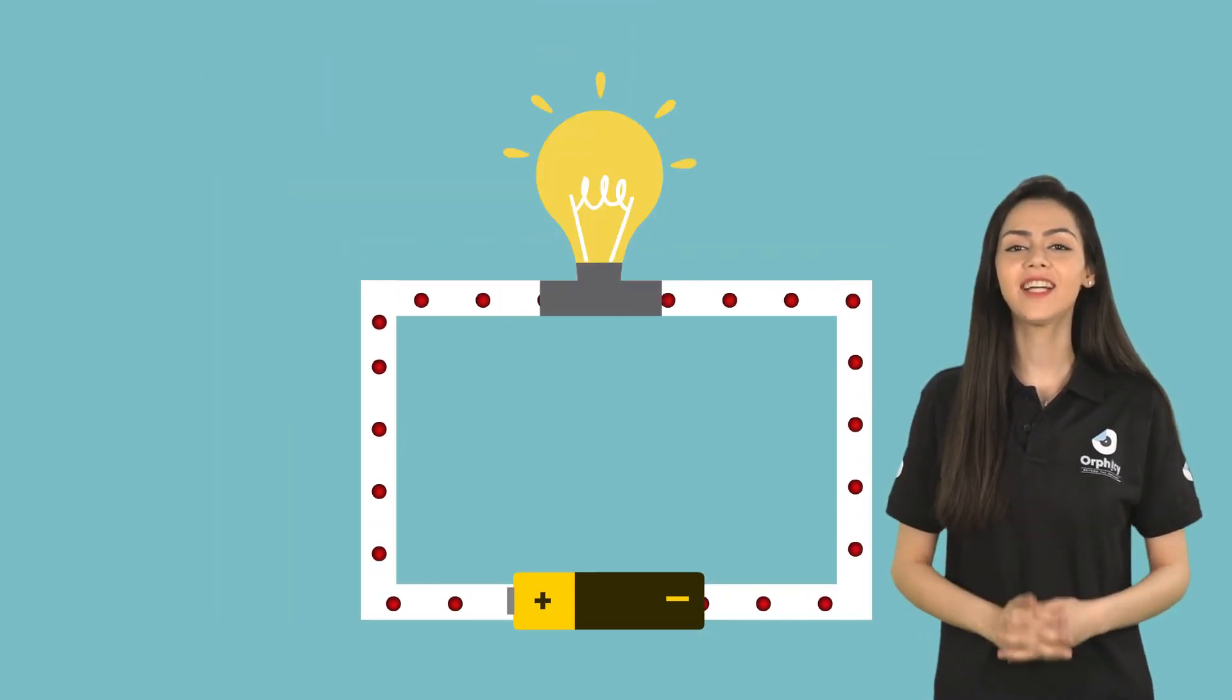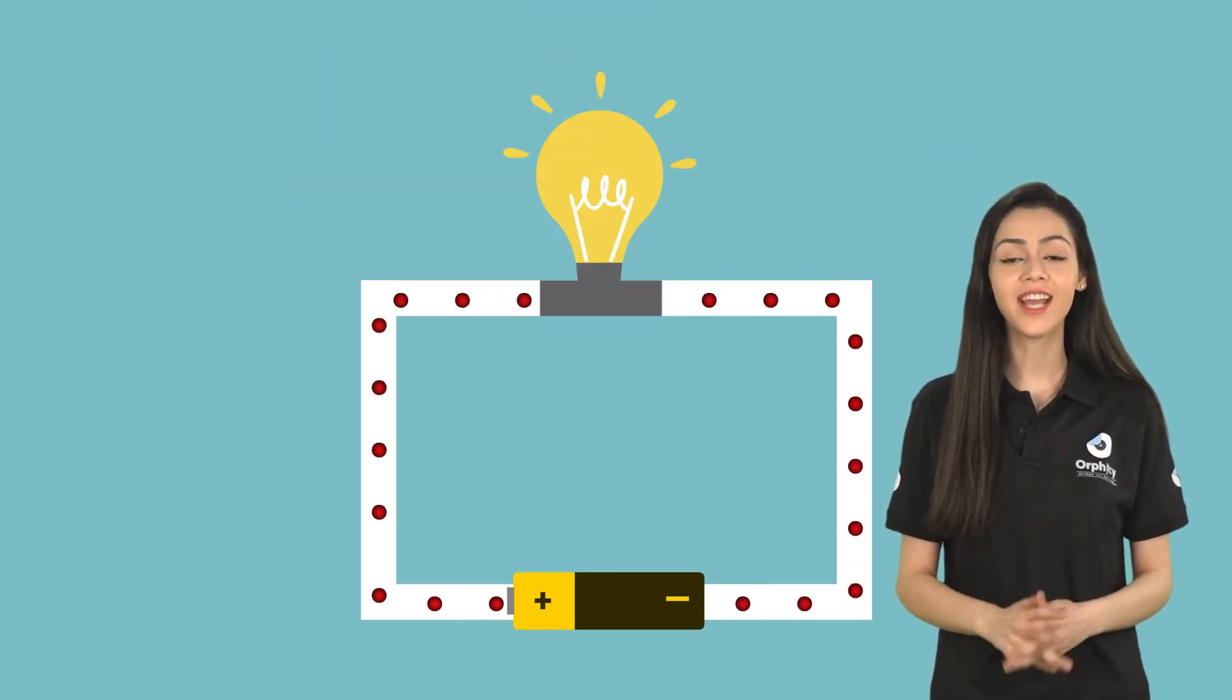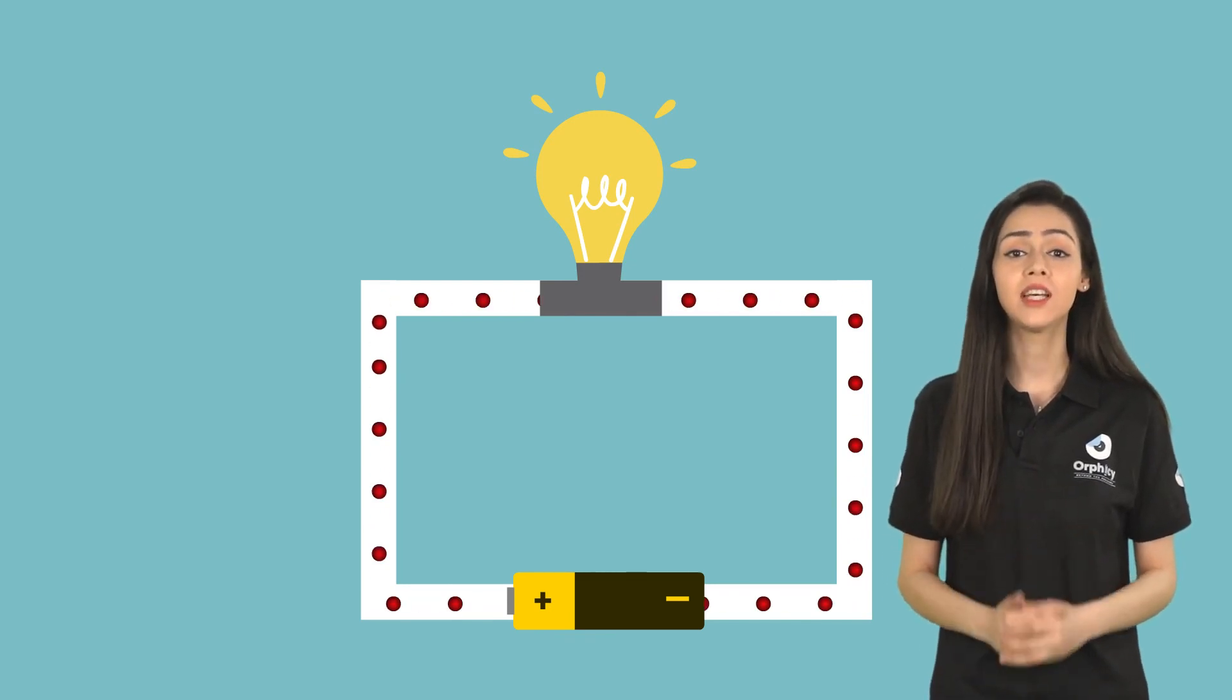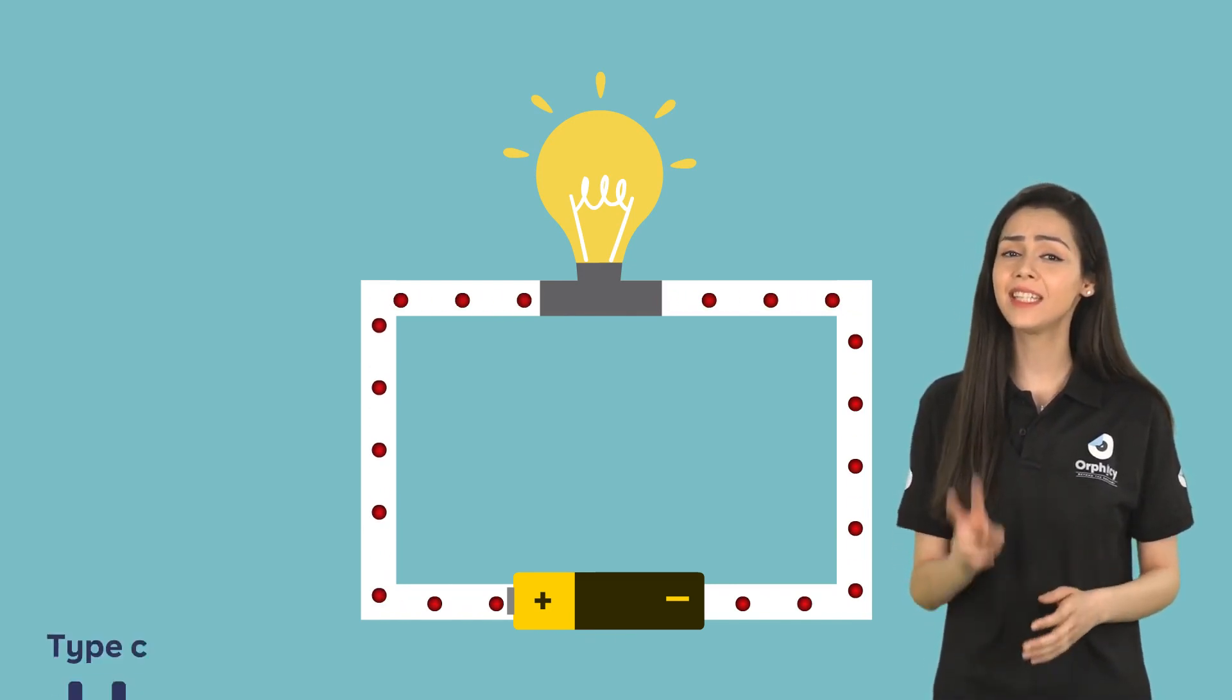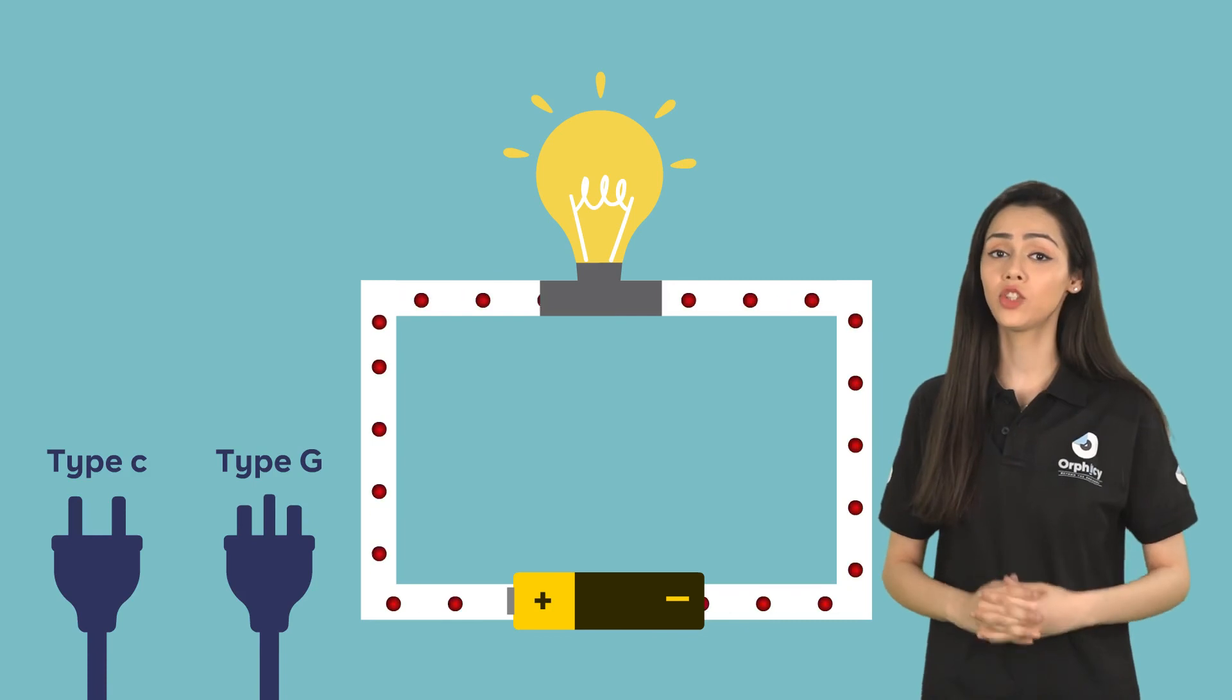All electrical devices are powered this way and this is why your battery has two poles known as terminals. This is also why the plug has at least two tongs which go inside the socket.